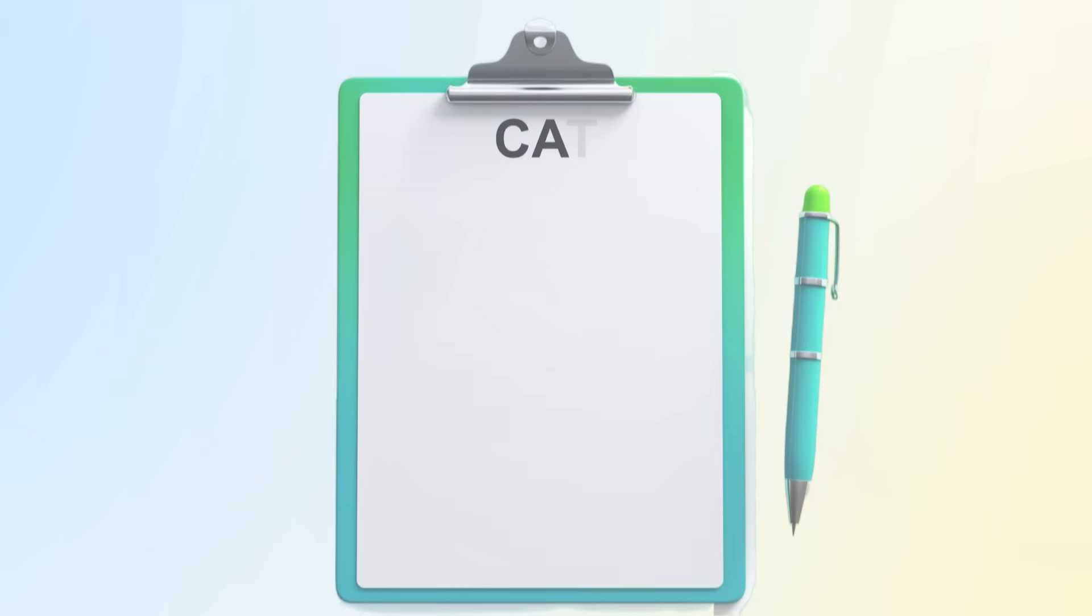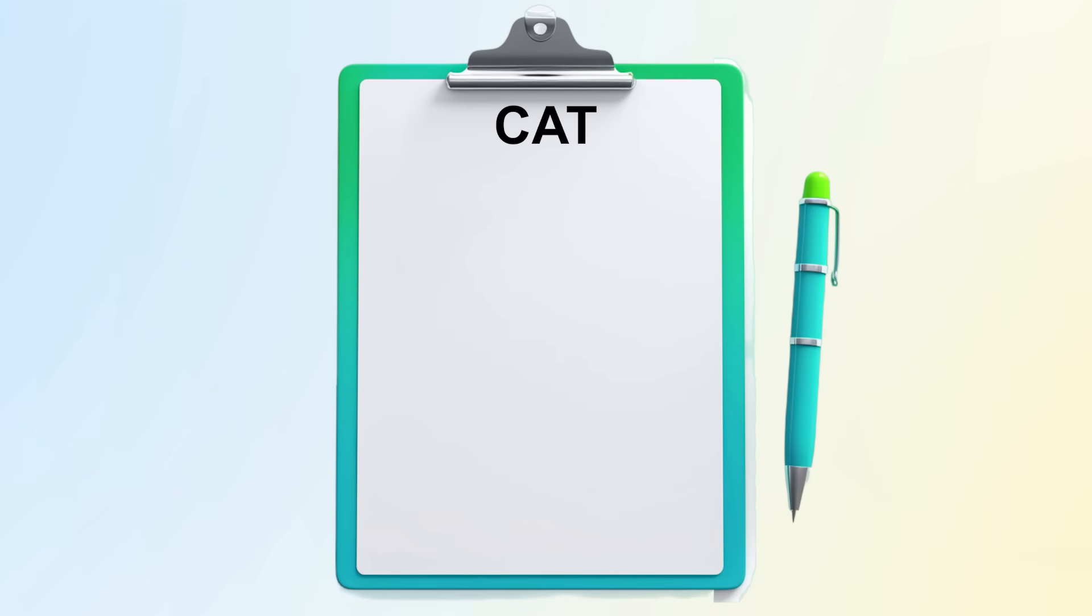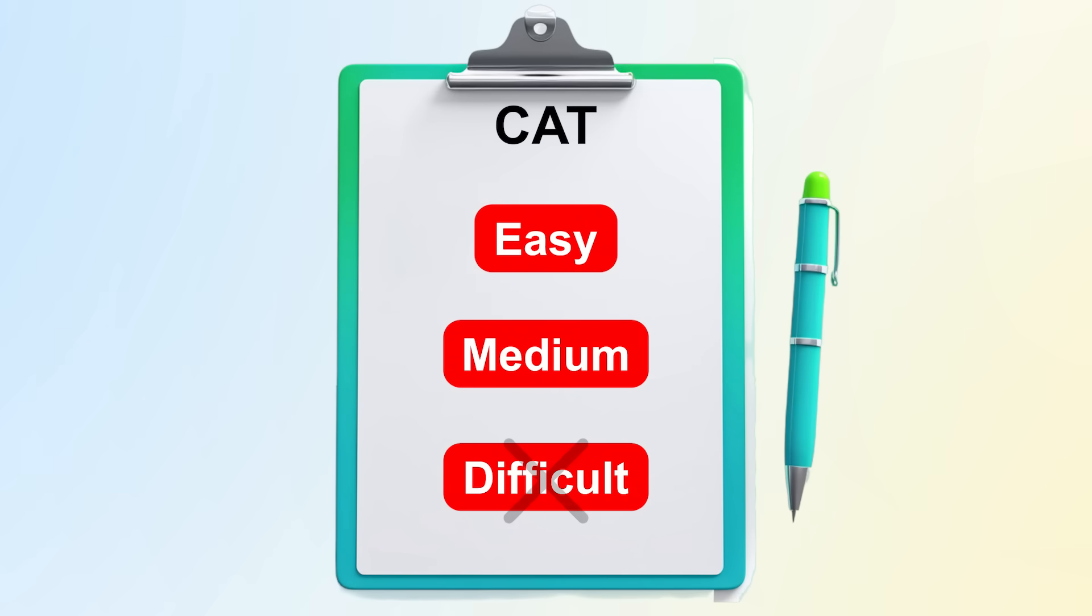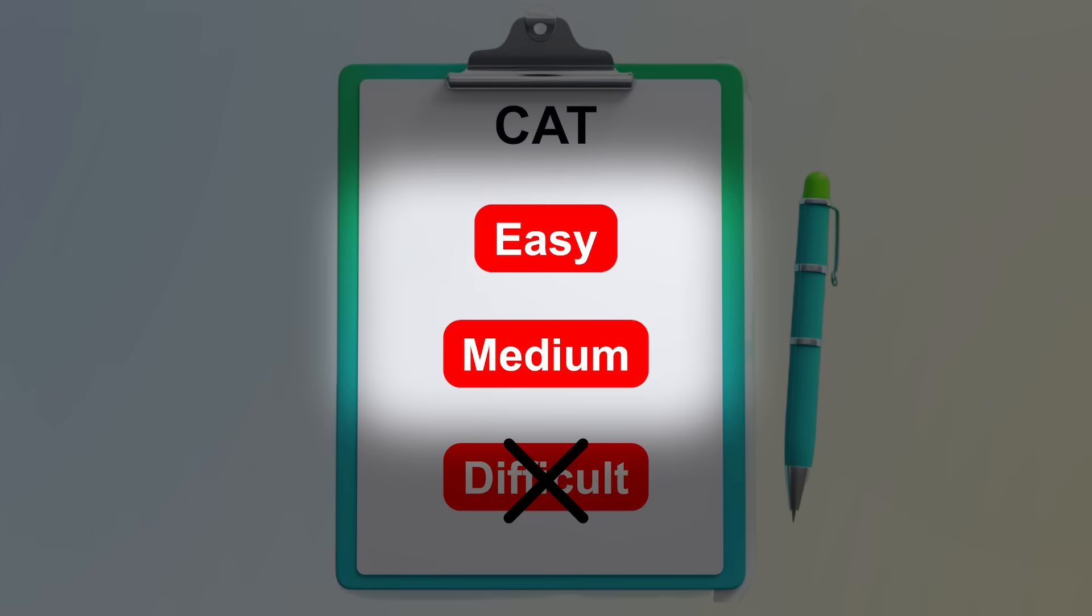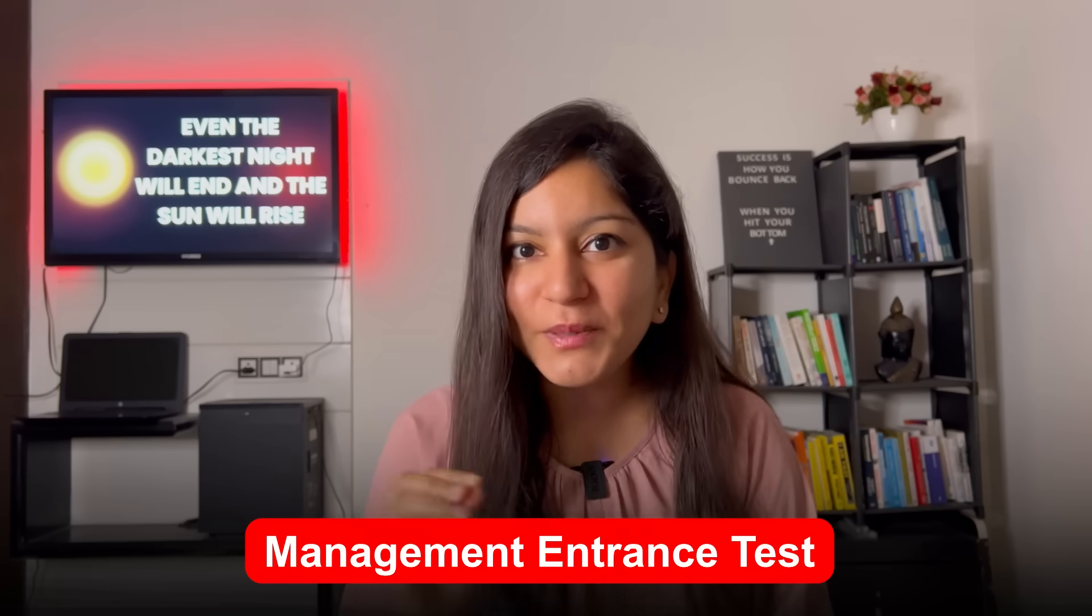Whenever you have to take the CAT exam, there are three types of questions: easy, medium, and difficult. Now, difficult level questions, of course, many people can't solve it. But you don't have to do all difficult questions. That is how the paper is designed. CAT is a management entrance test.